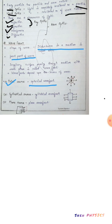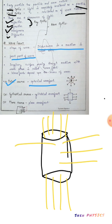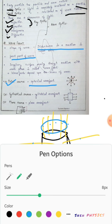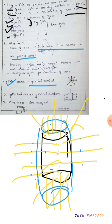Now let's see different shapes of wavefronts when we have different sources available. Let's consider a cylindrical shape. This is a cylindrical bulb. In different directions — upper, downward — there will be light rays. When we join these points, we get a cylindrical shape of a wavefront. When we have a cylindrical source, we will get a cylindrical wavefront.